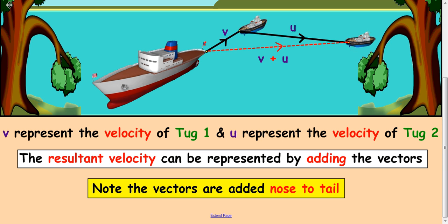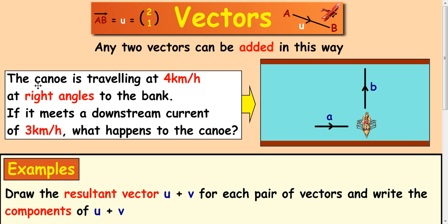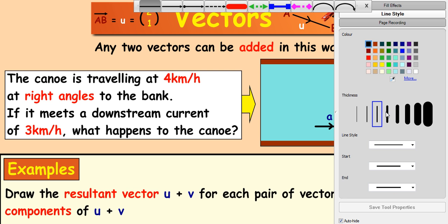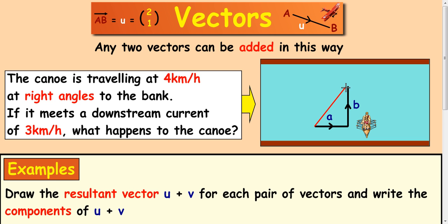Okay, let's have a look at some examples. This first example: the canoe is travelling at four kilometers at right angles to the bank. If it meets a downstream current at three, what happens to the canoe? Same idea, you can put the vectors nose to tail and you can see that the resultant vector a plus b would be going in this direction. So the canoe would be pushed in that direction here.